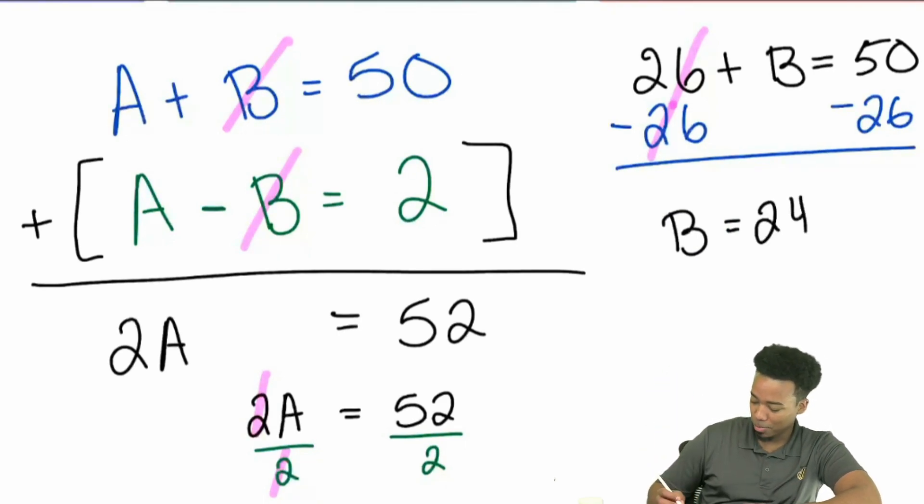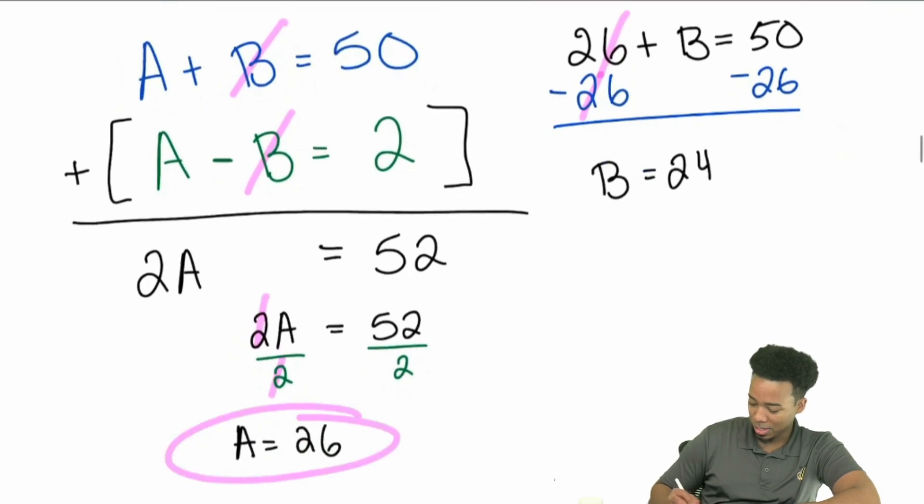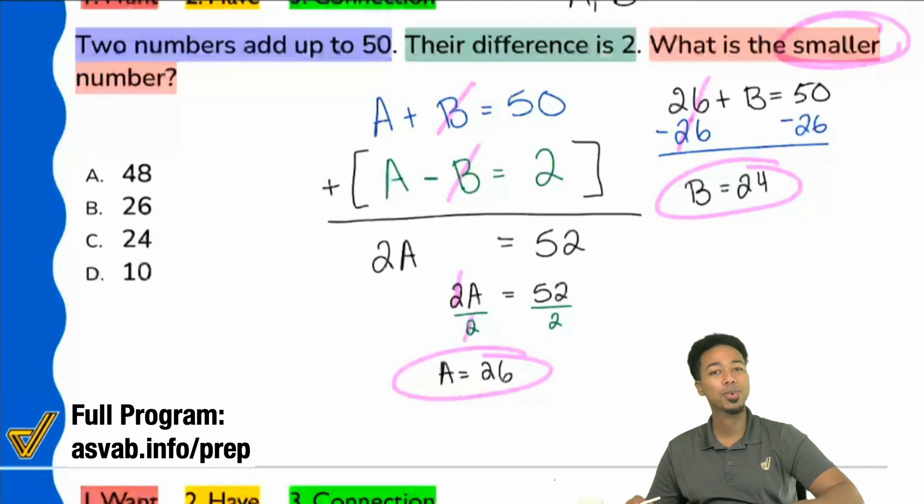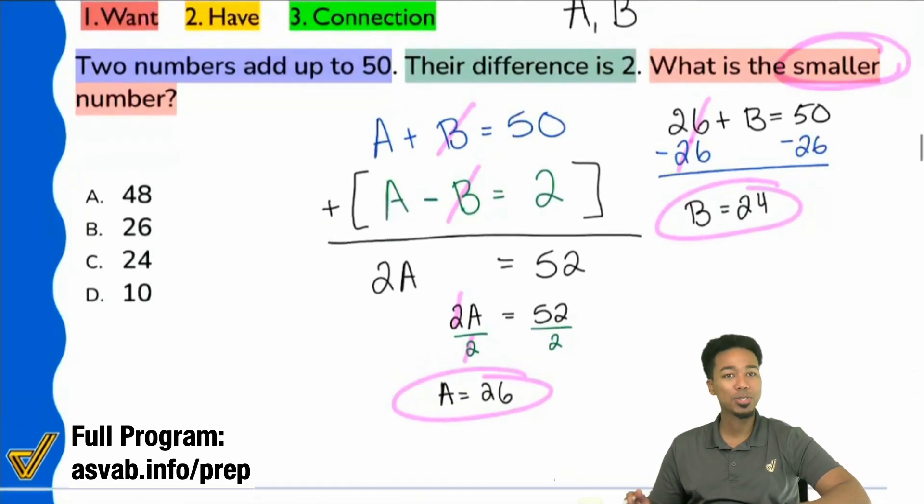So look at that. We have two numbers here. Which one is the smaller number? Because again, it says smaller number. Which one's the smaller one? That's going to be 24.